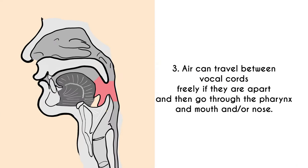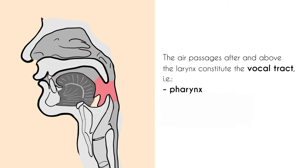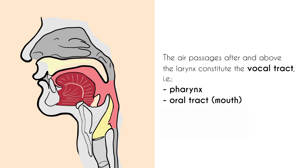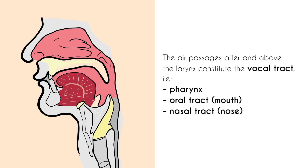What happens after the vocal folds? After the larynx, the air goes through the pharynx. Air passages above the larynx make up the vocal tract. The vocal tract includes the pharynx, the oral tract (the mouth), and the nasal tract (the nose). This entire space is called the vocal tract.